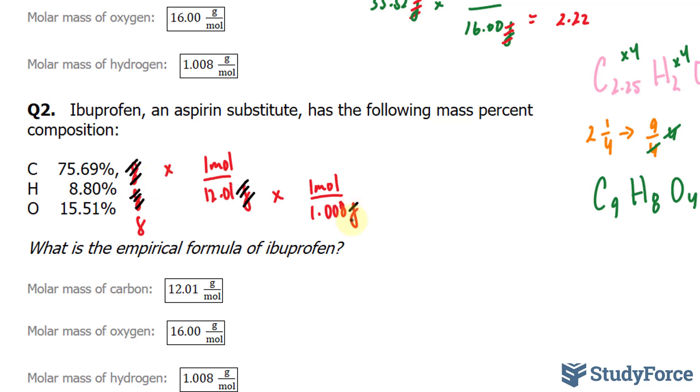This gram unit will cancel out with this one. And lastly, I'll multiply 15.51 grams by 1 mol over 16.00 grams. This will cancel out with this.